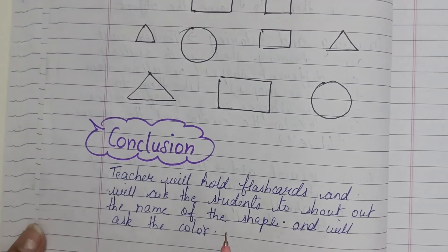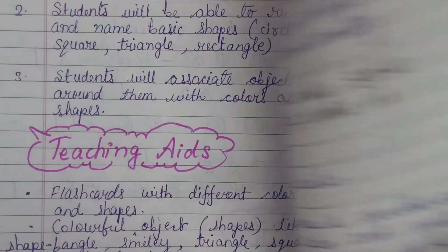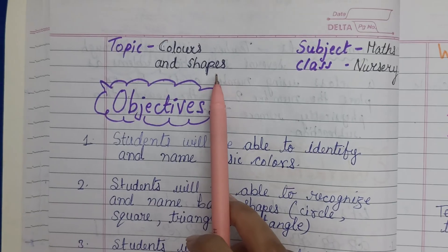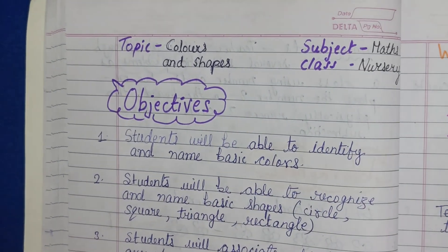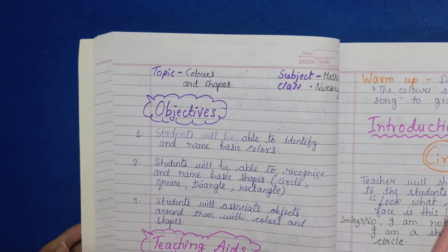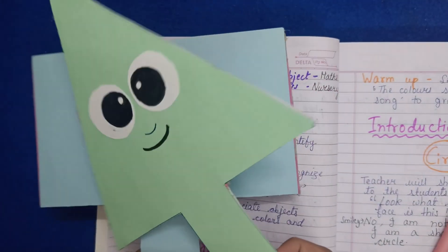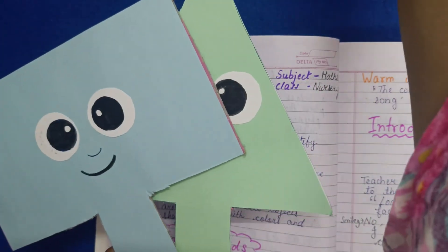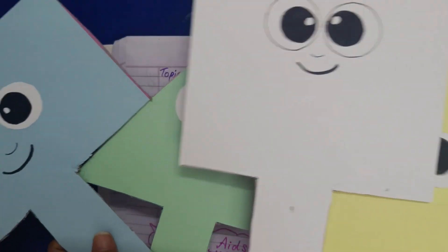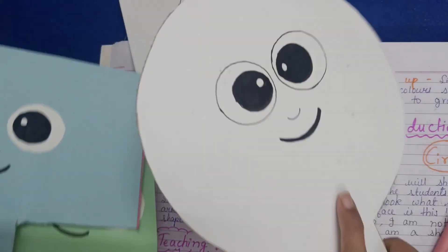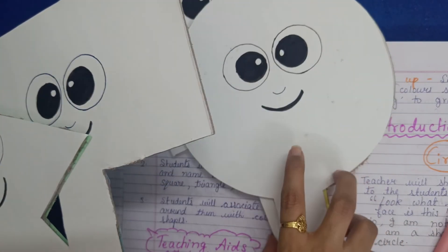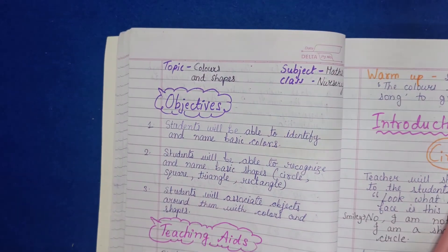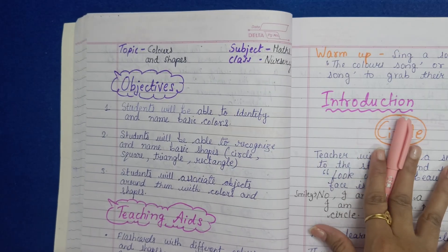For the conclusion, the teacher will hold up flashcards and ask students to shout out the name of the shape and its color. That concludes the lesson plan for Colors and Shapes for the nursery class. Now for teaching aids — these are the cardboard teaching aids you can use: circle and square, four shapes in total. The front side is white, then you turn it around and ask students the name of the color. Kindly like and subscribe to my channel, thank you.